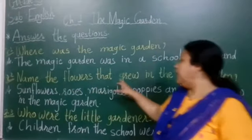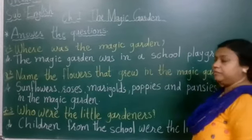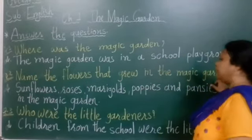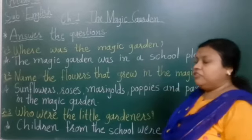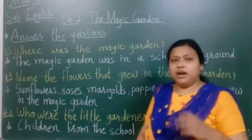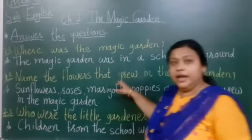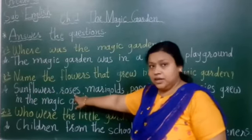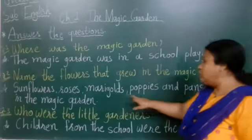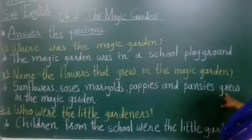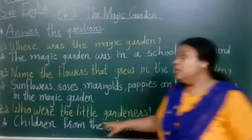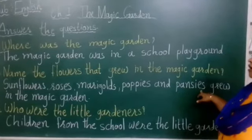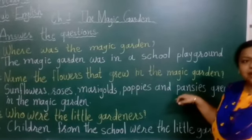Name the flowers that grew in the magic garden. Jho flowers wahan pe grew hoti thi, unke name likhne hain. The answer is: sunflowers, roses, marigolds, poppies, and pansies grew in the magic garden.